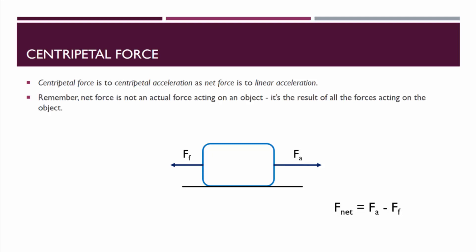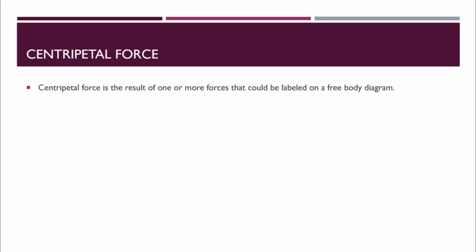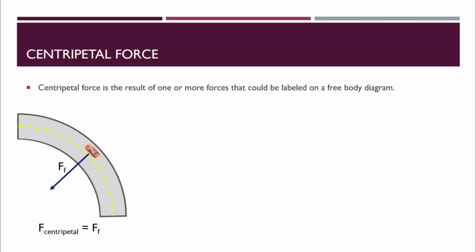The centripetal force is the same way. The centripetal force is the result of one or more forces that could be labeled on a free body diagram. For a car driving around a curved track, the force that keeps the car in the circular path — in other words, the force that prevents the car from skidding off the road — is the force of friction. In this case, we would say the centripetal force equals the friction force.